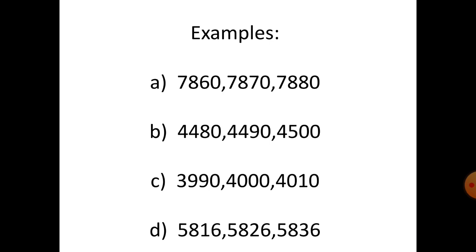Add ten: seven thousand eight hundred and eighty. Number B: four thousand four hundred and eighty, four thousand four hundred and ninety, four thousand five hundred. You just add ten each time. Number C: three thousand nine hundred and ninety.